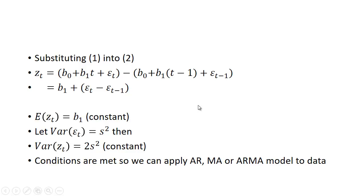Well, what's the expected value of z_t? It's going to be equal to b_1, because b_1 is a constant and the expected value of these is going to be equal to zero.